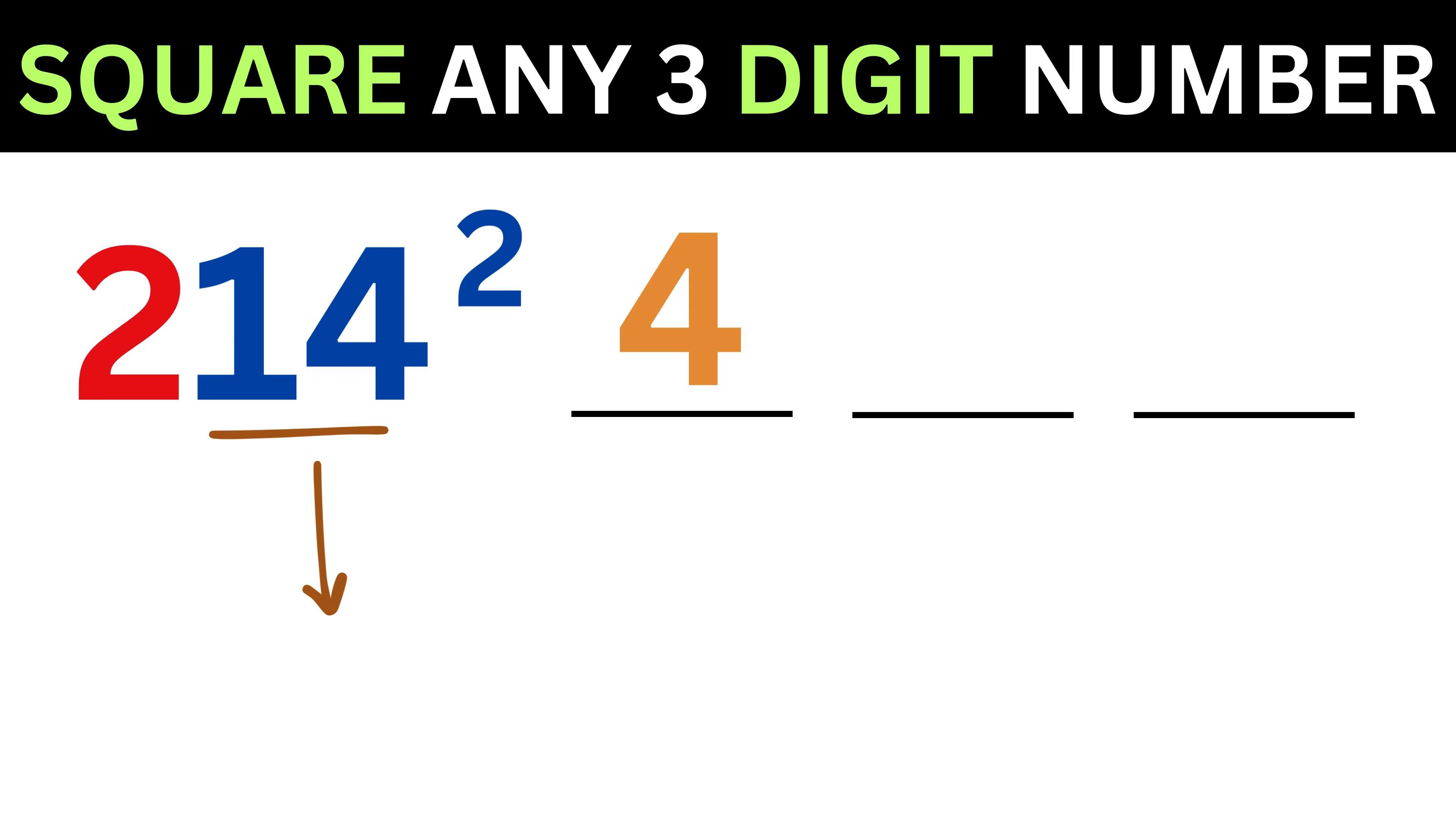Now consider the second part of our number, which is 14, and square it. 14 square is 196.